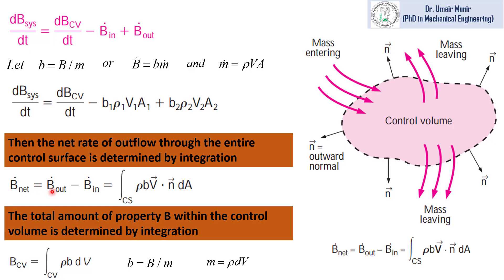We can write B-dot, that is the flux crossing the boundaries of the control volume, in integral form. This integral is a surface integral where CS stands for control surface, rho v dA is the mass flow rate, and b is the property of the system per unit mass. In this expression, v dot n is the velocity in the n-direction, where n is the direction normal to the surface — we always need the velocity component normal to the surface.